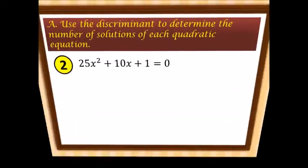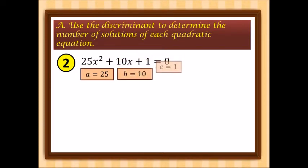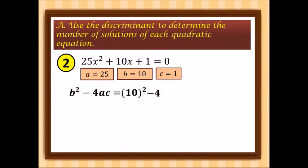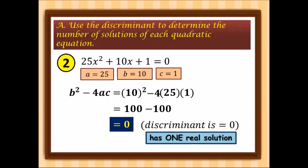Second example: 25x squared plus 10x plus 1 is equal to 0. Here a is 25, b is 10, and c is 1. Substituting: 10 squared minus 4 times 25 times 1 — that's 100 minus 100, which is equal to 0. The discriminant is equal to 0, therefore it has one real solution.